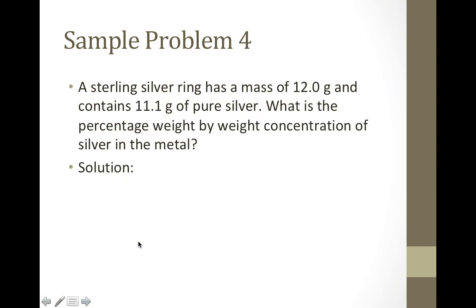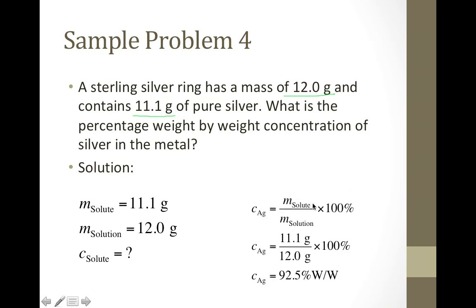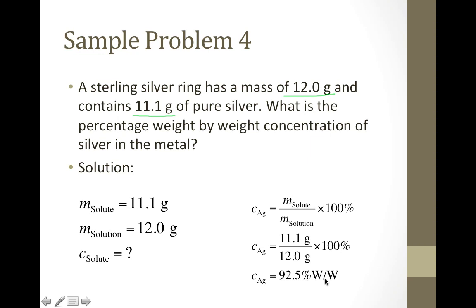Sample problem 4: a sterling silver ring has a mass of 12 grams and contains 11.1 grams of pure silver. The ring's total mass is the mass of our solution (12 g), and the silver is our solute (11.1 g). Using percentage W/W: mass of solute divided by mass of solution times 100% — that's 11.1 g divided by 12.0 g times 100% — we get 92.5% W/W.